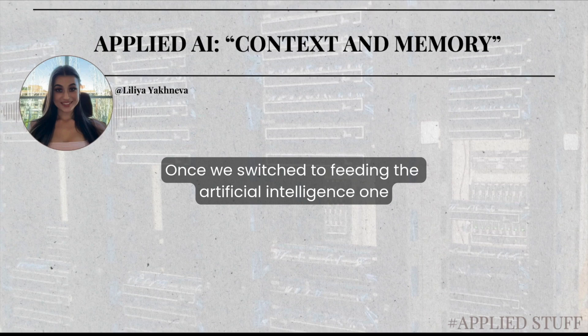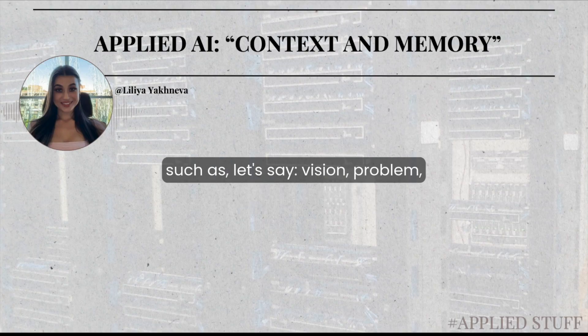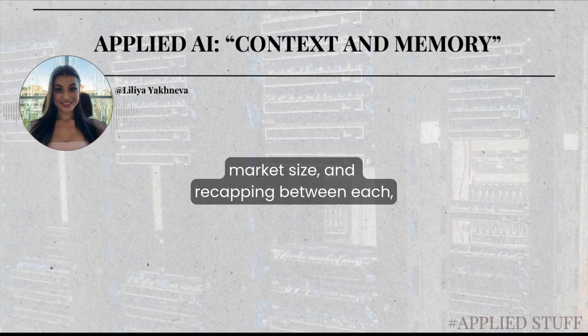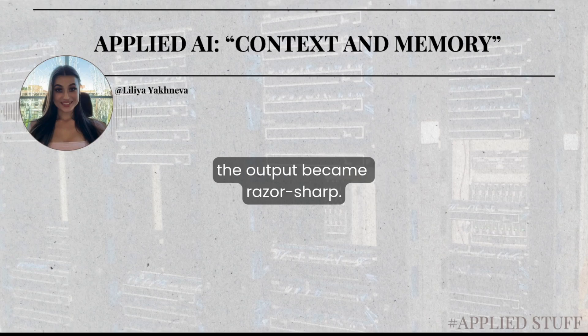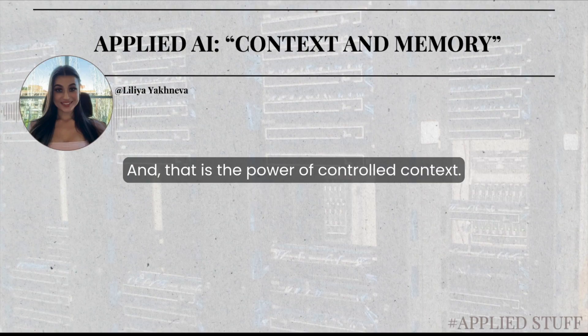Once we switched to feeding the artificial intelligence one section at a time, one problem at a time — such as vision, problem, solution, market size — and recapping between each, the output became razor sharp. Investors commented on how clear and consistent the message was. And that is the power of controlled context.